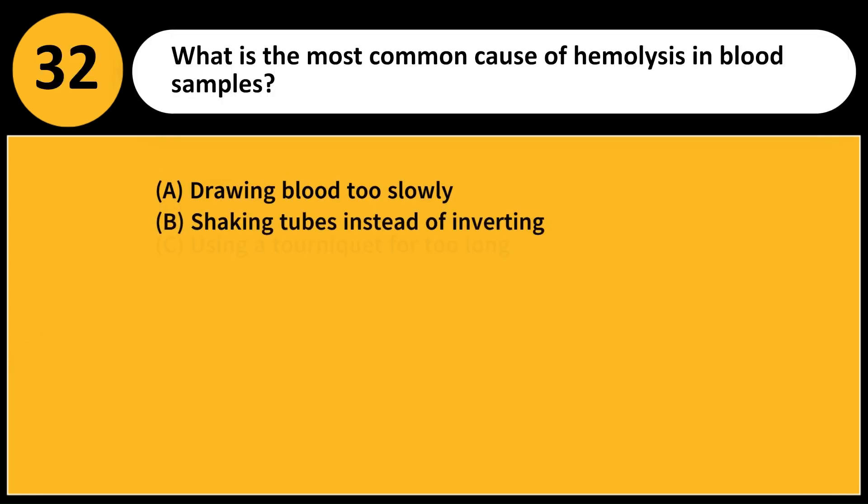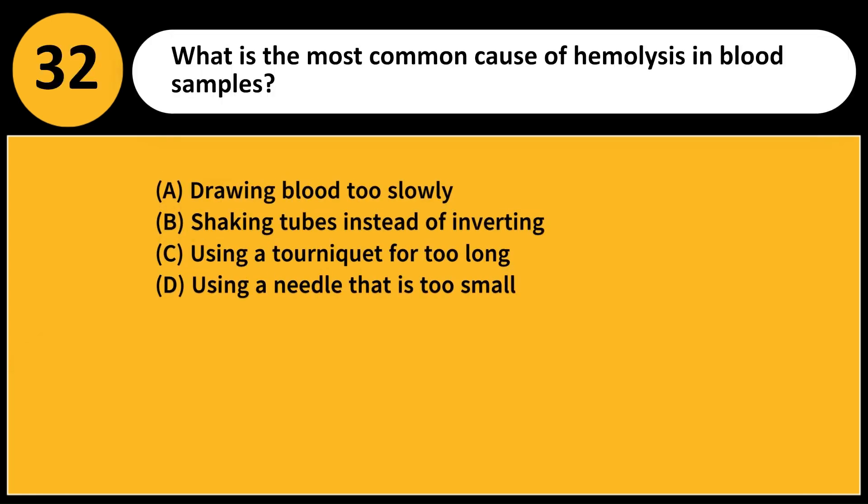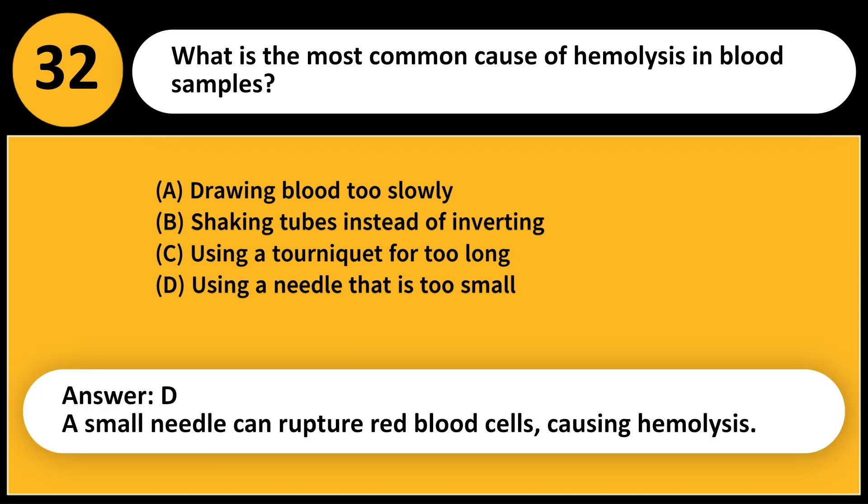What is the most common cause of hemolysis in blood samples? A. Drawing blood too slowly. B. Shaking tubes instead of inverting. C. Using a tourniquet for too long. D. Using a needle that is too small. Answer: D. A small needle can rupture red blood cells, causing hemolysis.